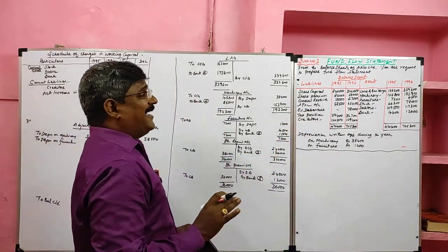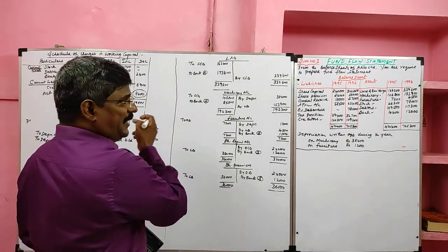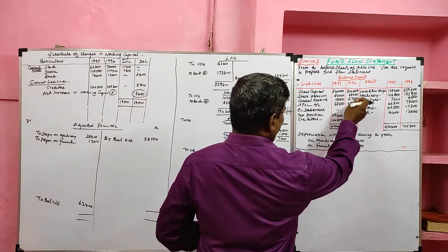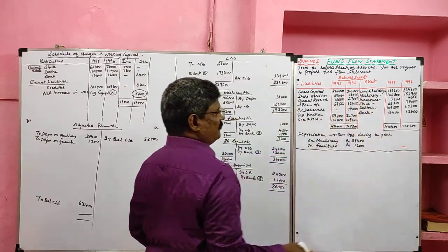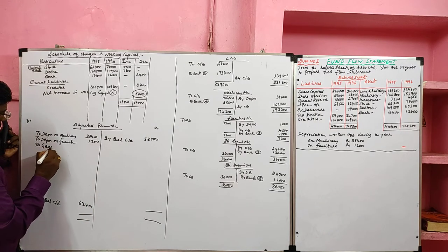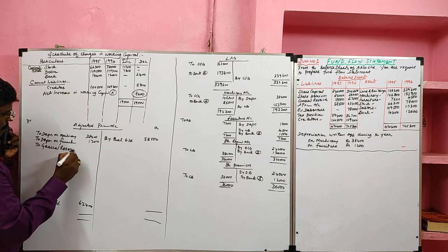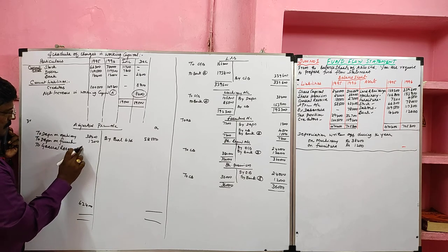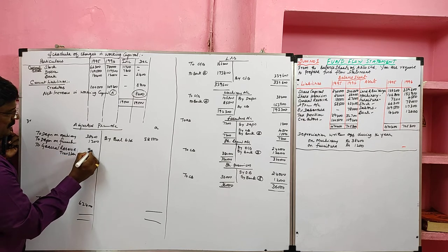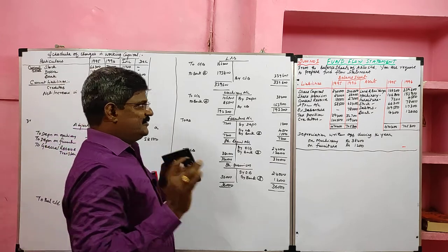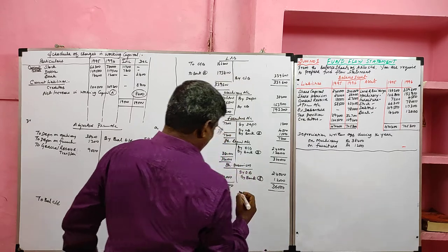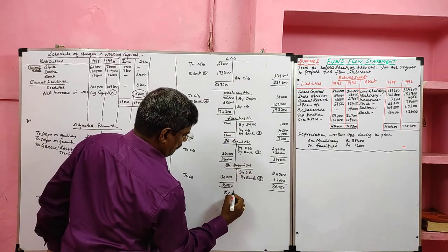For general reserve, we need not prepare a ledger account. Opening balance 18,000, closing balance 27,000 — increase of 9,000 is treated as general reserve transfer and debited to the adjusted profit and loss account. For the profit and loss account, it is already considered. Then we prepare a ledger account for 8% debentures.